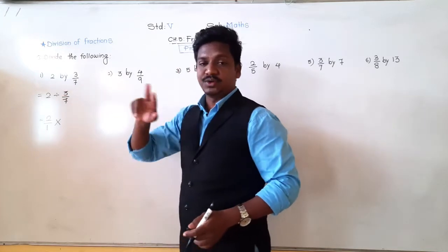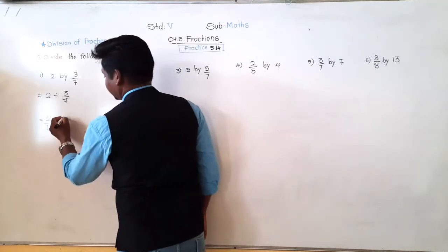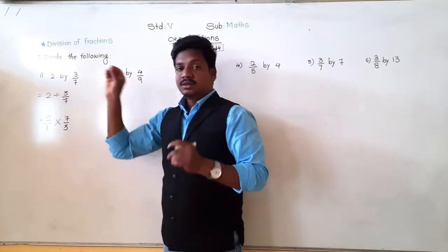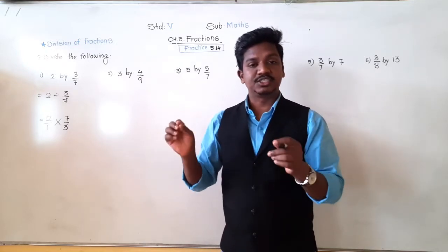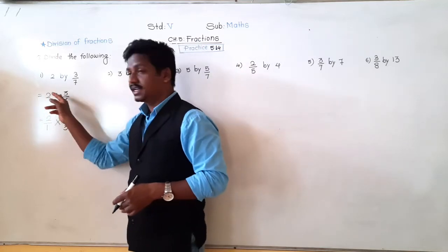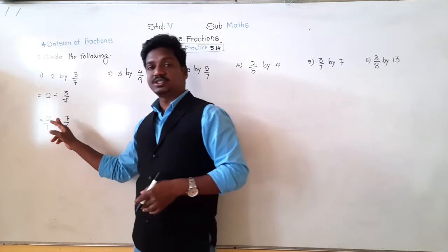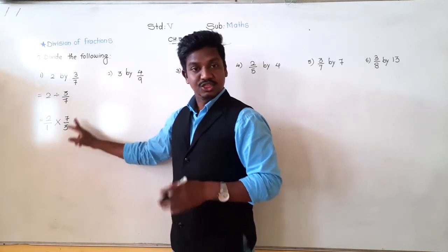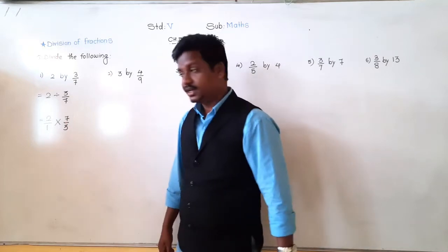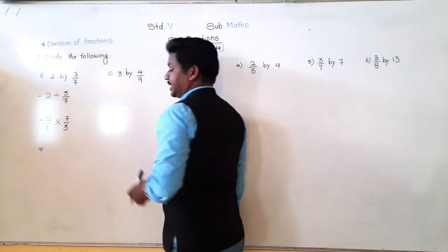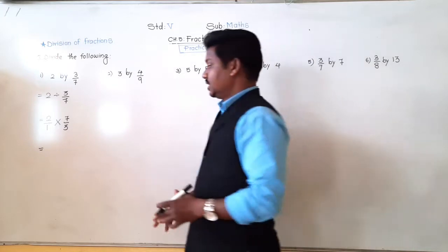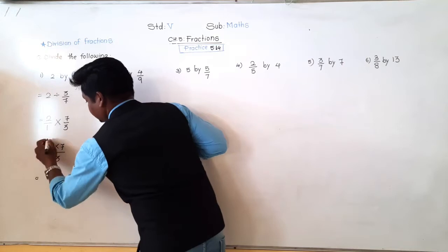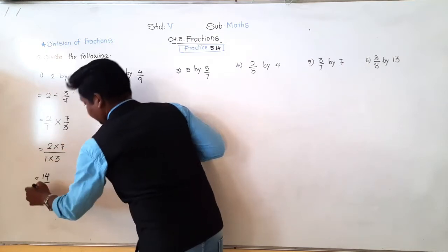The next fraction we write upside down — ULTA means upside down. 7 will go up and 3 will come down. Division by fraction means multiplication by its reciprocal, so we write the multiplication symbol instead of division. When we wrote multiplication instead of division, the next fraction is not written as it is — it is changed into its reciprocal. Now multiply numerator with numerator and denominator with denominator: 2 × 7 = 14, upon 1 × 3 = 3, giving us 14 upon 3.